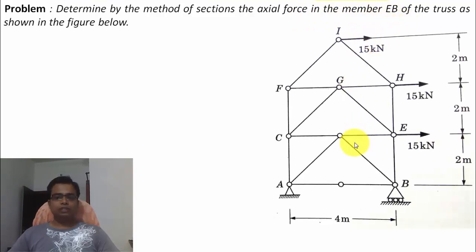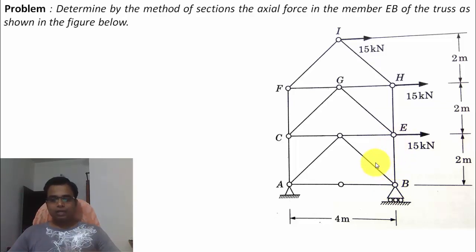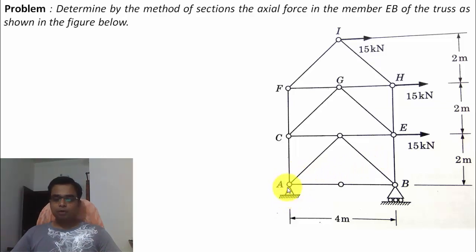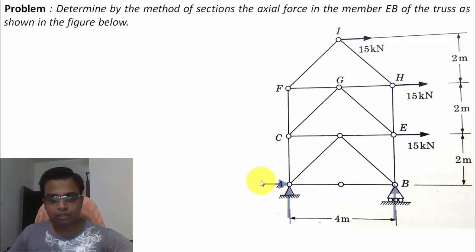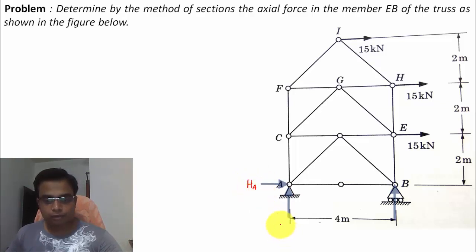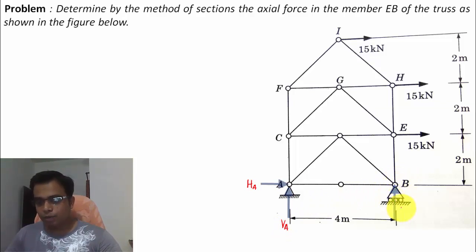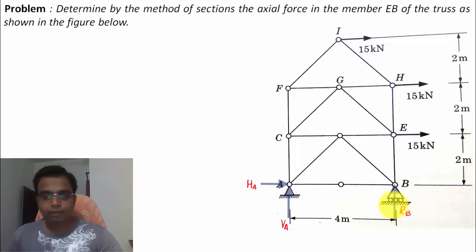So this is the member EB in which the actual force is to be calculated. Initially we need to find the reactions at the supports. This is a hinge support, and hence we get two forces: HA in the horizontal direction and VA. At point B we have a roller support, and hence there is one single vertical reaction, let's call it RB.